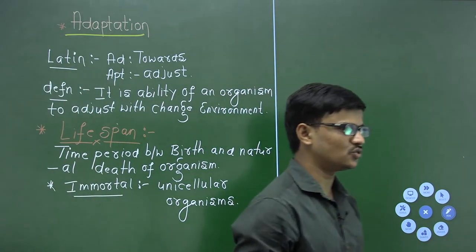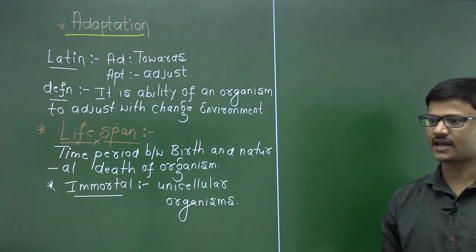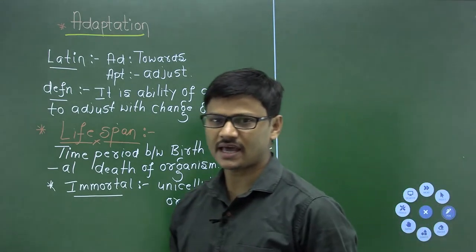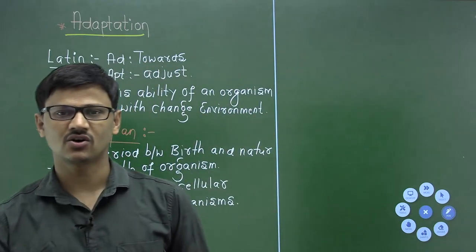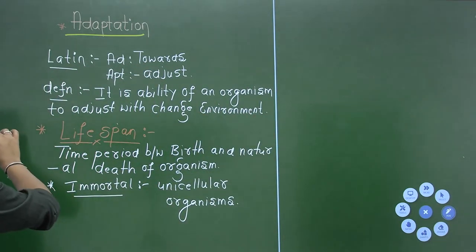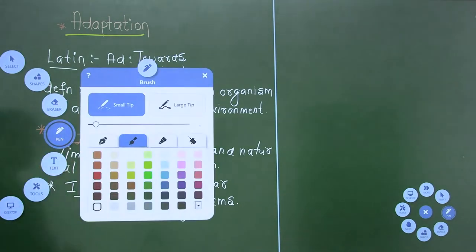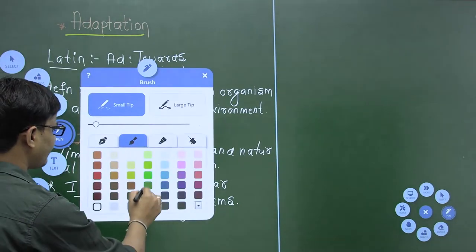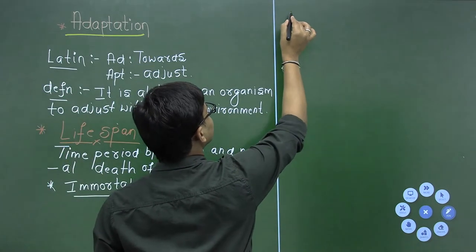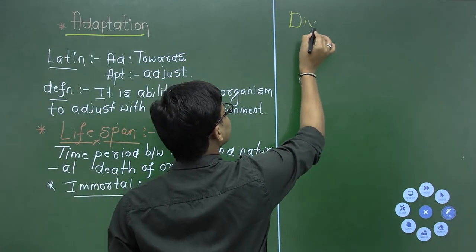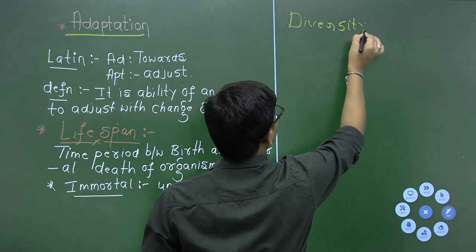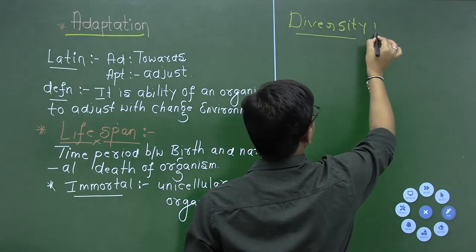So students, these are two more properties — two more living characteristics of organisms. That is all about living characteristics. Next in our syllabus, they have given one more thing: it is diversity in the living world.